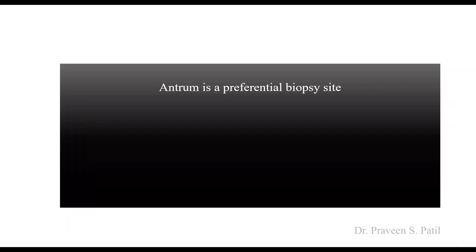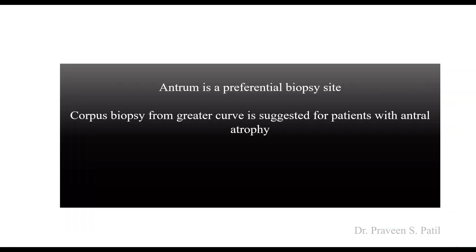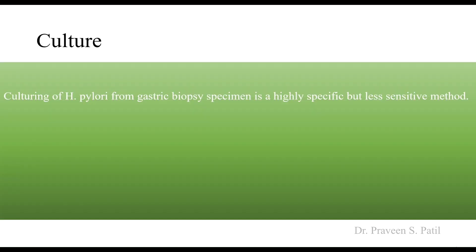RUT has specificity above 95 to 100 percent and sensitivity of 85 to 95 percent. The antrum is the preferred biopsy site; corpus biopsy from the greater curvature is suggested for patients with antral atrophy. The patient should not take PPIs for at least two weeks and antibiotics for at least four weeks before the biopsy. This rule holds good for most investigations used to identify H. pylori.